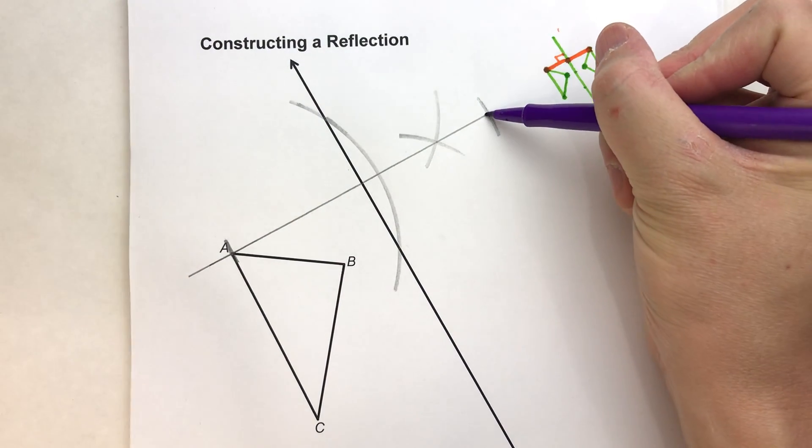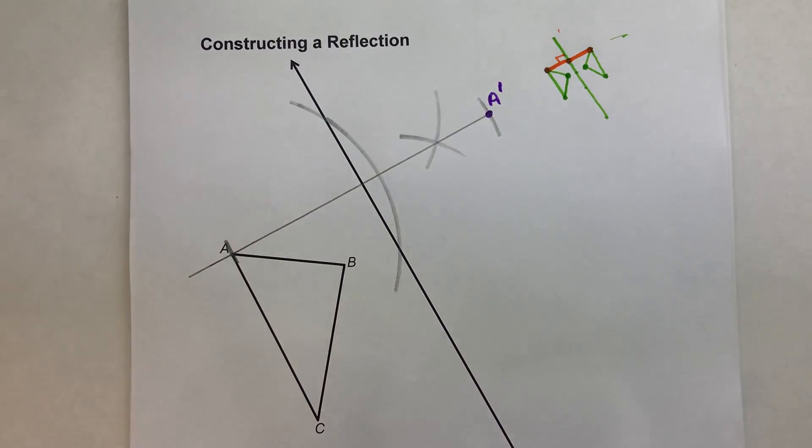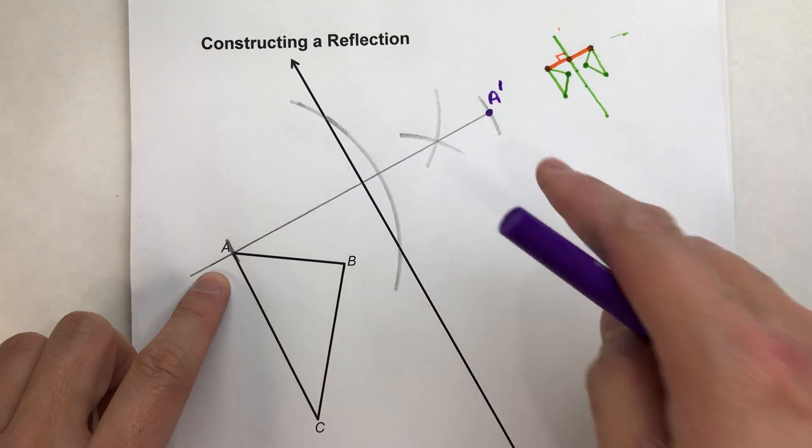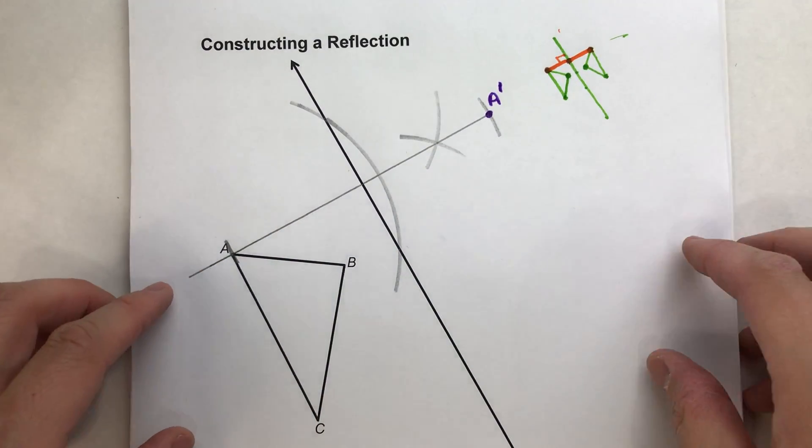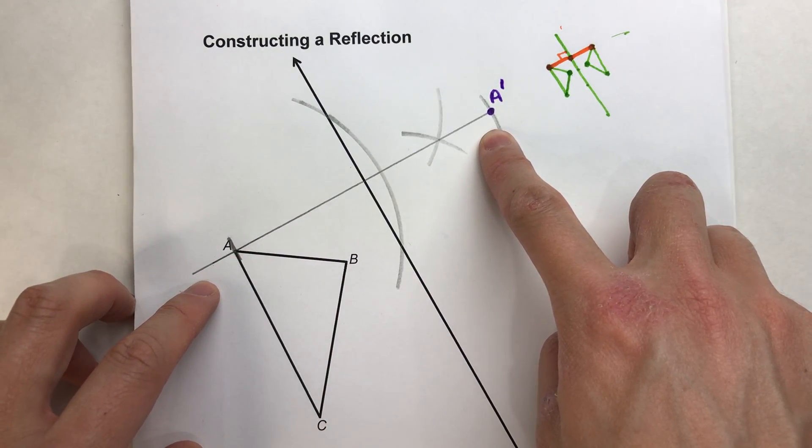And now I know where point A prime is going to be. It's going to be right here. And notice I label it A prime because that's the reflected point. Now that's how you find a reflected point across the line.